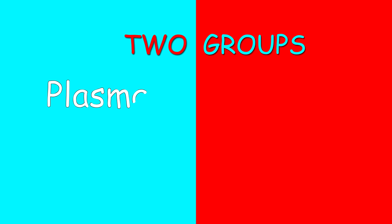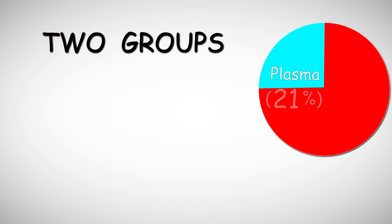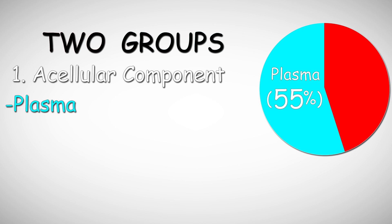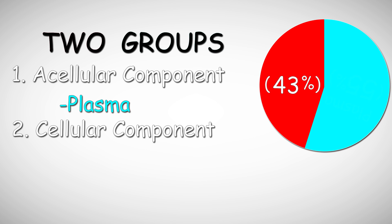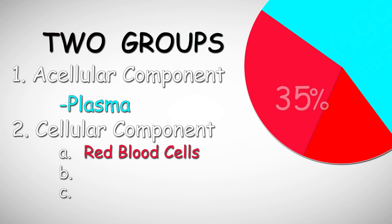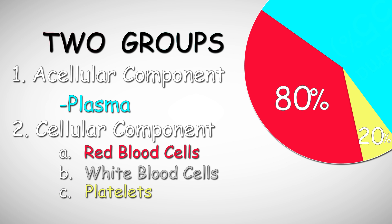Generally, we can divide the blood into two main groups. The first one is called the plasma, which fills 55% of the total blood volume. It is the liquid component of the blood and has no cellular content. The other 45% is the blood cellular component, divided into three different kinds of cells. The greatest portion goes to the red blood cells at 80%, and the remaining 20% is shared by the white blood cells and the platelets.